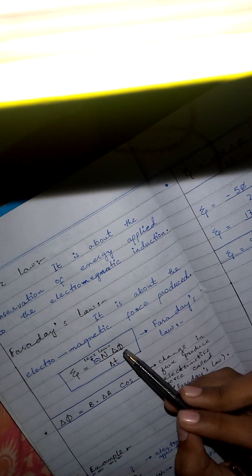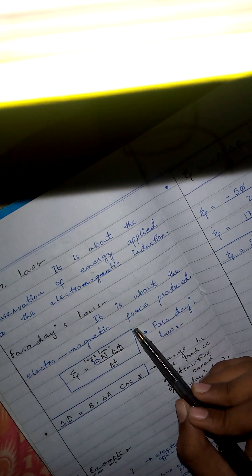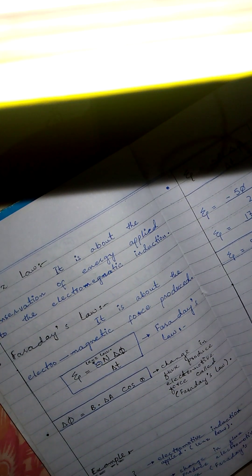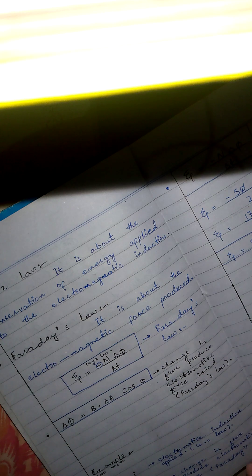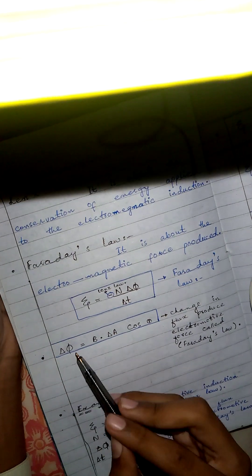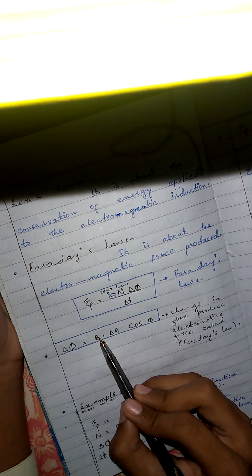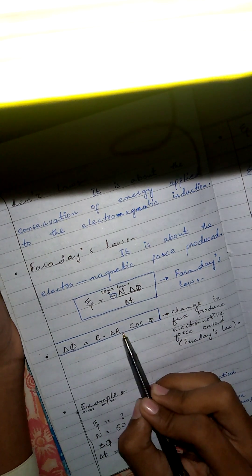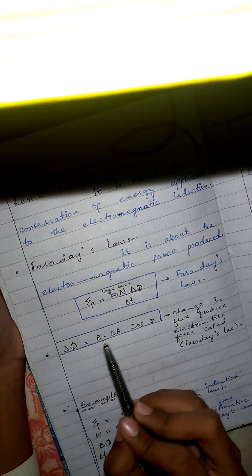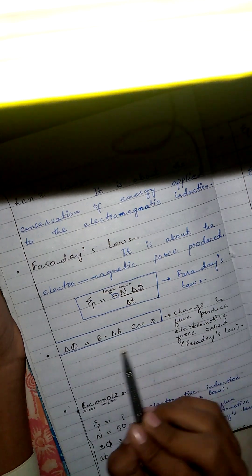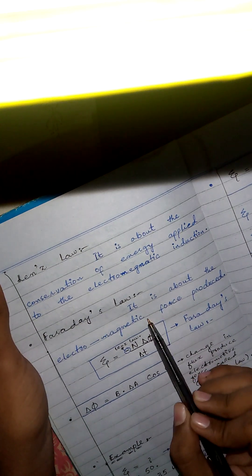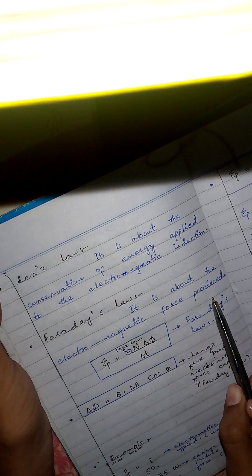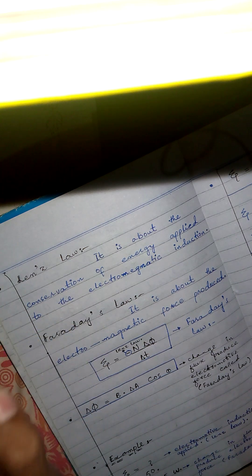Talking about Faraday's law, it is about the electromagnetic force produced — a change in flux produces electromotive force, that is called Faraday's law. The formula for change in flux is equal to magnetic field multiplied by change in area and cos theta. This change in flux produces electromotive force, and that relationship is called Faraday's law.